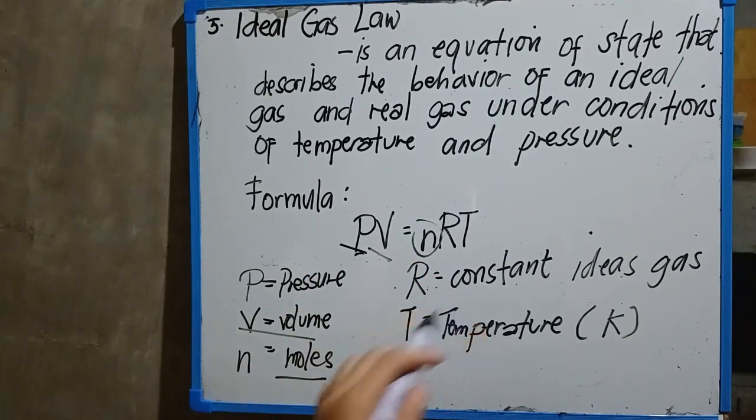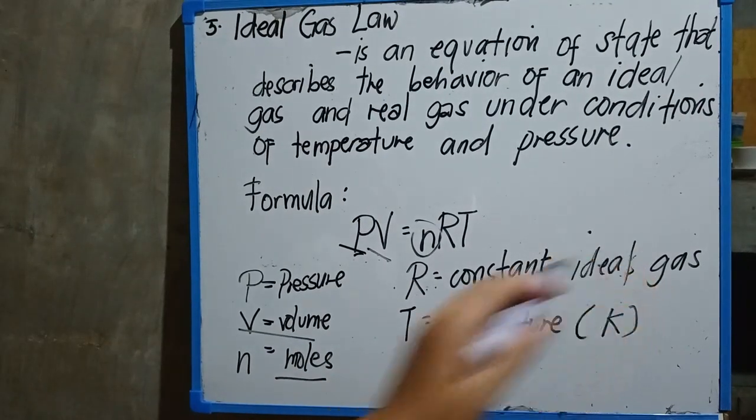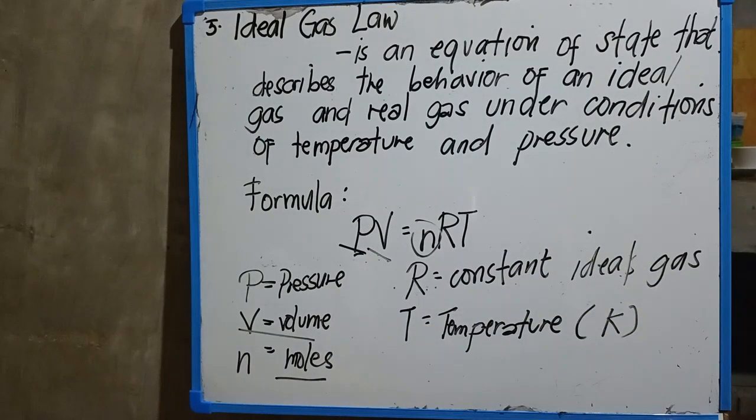Then R is a constant ideal gas, which means that the R has already its constant value, which is 0.0821 liter·atm per mole per kelvin. And our T stands for temperature. We know that for temperature we always use kelvin as the unit.